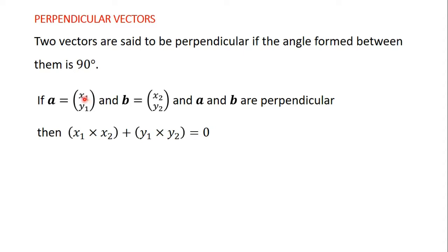So as you can see, x1 times x2 — which are the two x components — their product, plus the product of the two y components, y1 times y2. When you add these two products, you should get 0.